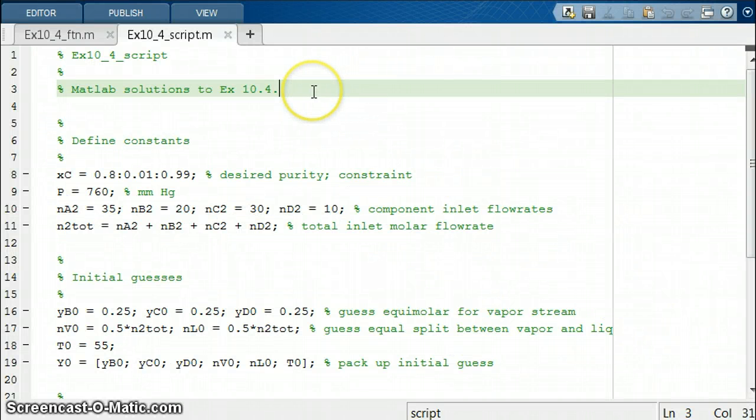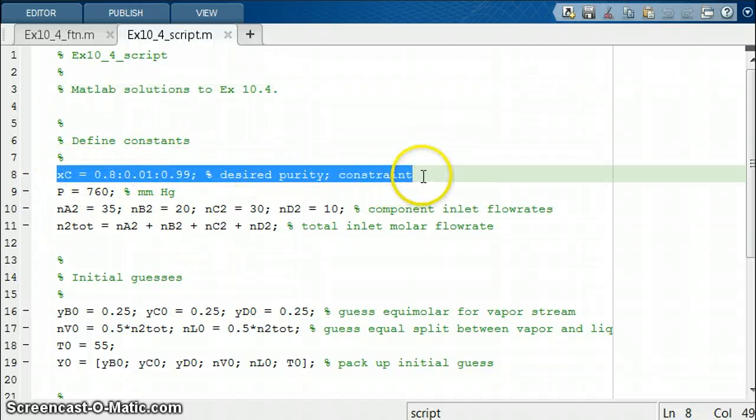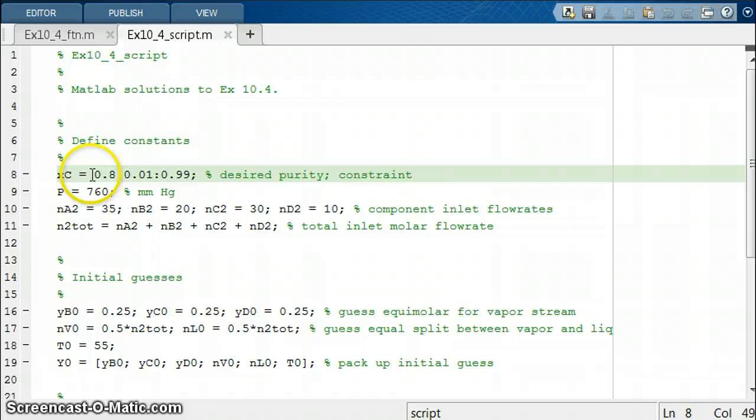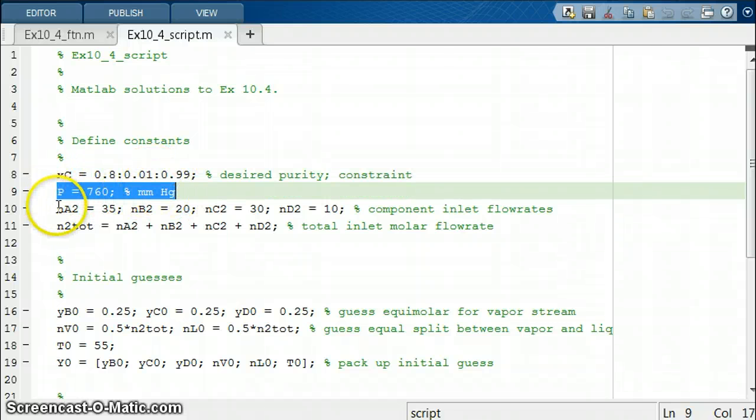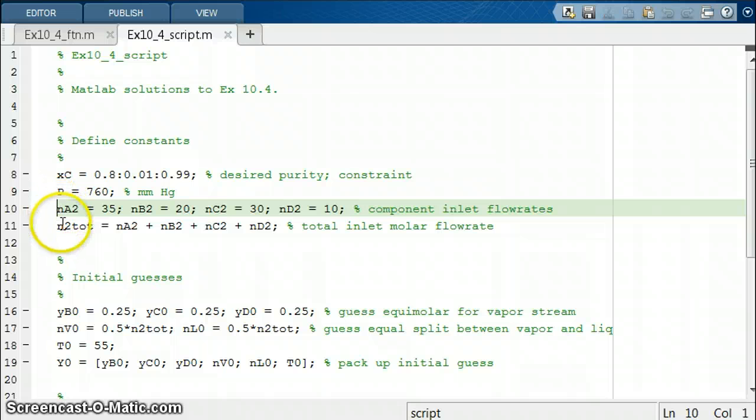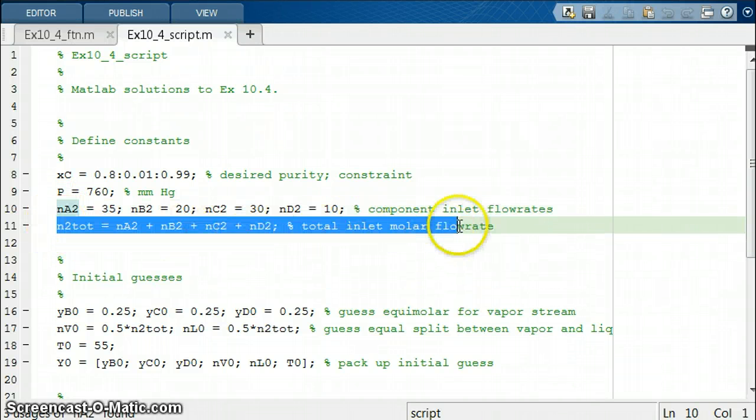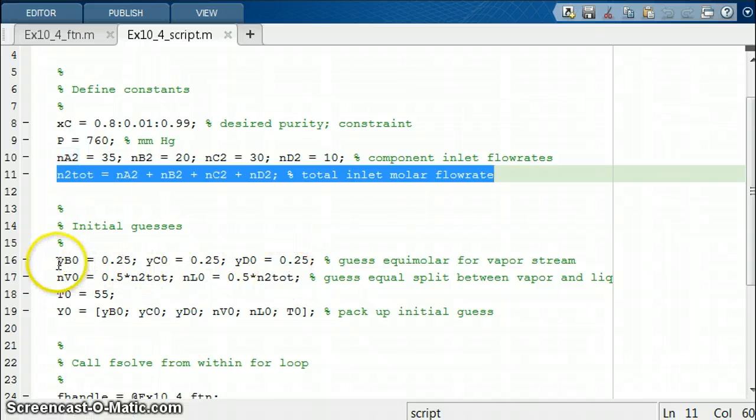Here's the script that we just described. We have our vector of desired purity, which is our constraint on the problem. We want XC to range from 0.8 up to 0.99 with an increment of 0.01. We have defined our system pressure, our component inlet flow rates. And then to help us along with the initial guess, as before, our total inlet molar flow rate. We defined our initial guesses the same way we did last time.